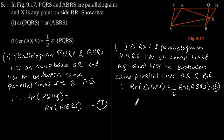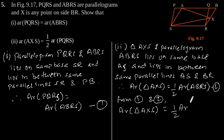From equation 1 and equation 2, we can say that area of triangle AXS is equal to half of area of PQRS, since we have proved area of PQRS is equal to area of ABRS.